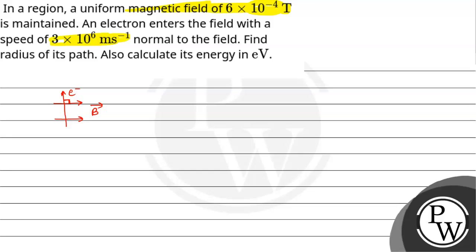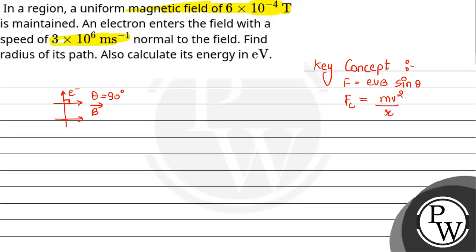We need to find the radius of the circular path and the electron's energy in eV. The key concepts are: the magnetic force formula F = qvB sinθ, where e is the charge on one electron (1.6×10⁻¹⁹ coulombs), v is the electron's speed, B is the magnetic field, and θ is the angle between them — here 90 degrees. The centripetal force formula is mv²/r, where m is the mass of the electron, v is speed, and r is radius.